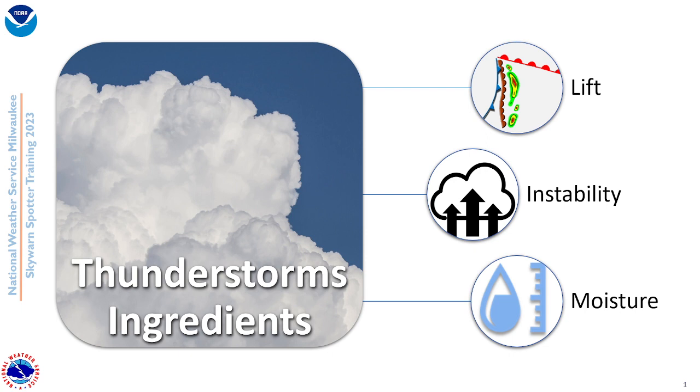The first thing to know is that there are three main ingredients when it comes to creating a thunderstorm: you need lift, you need instability, and you need moisture.